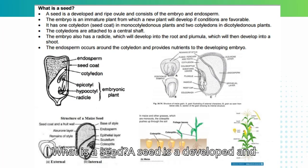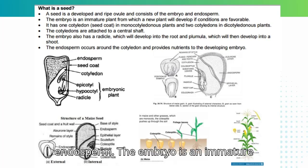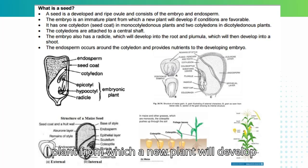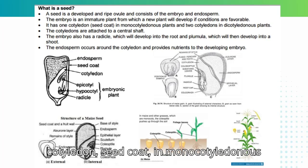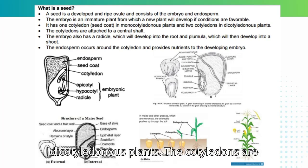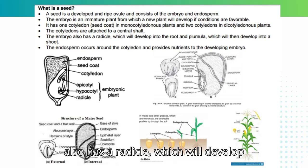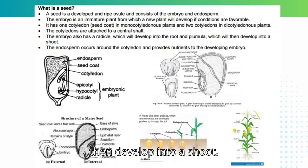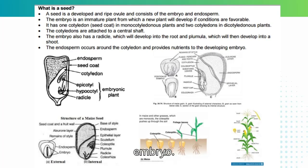What is a seed? A seed is a developed and ripe ovule and consists of the embryo and endosperm. The embryo is an immature plant from which a new plant will develop if conditions are favorable. It has one cotyledon in monocotyledonous plants and two cotyledons in dicotyledonous plants, attached to a central shaft. The embryo also has a radicle, which will develop into the root, and a plumule, which will develop into a shoot. The endosperm occurs around the cotyledon and provides nutrients to the developing embryo.